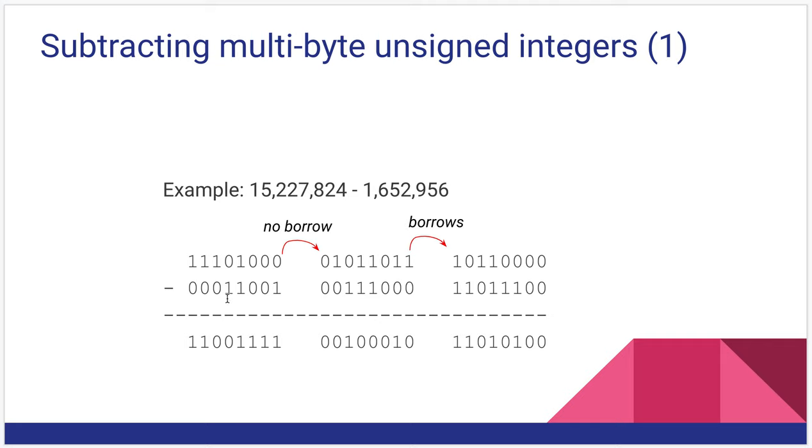Similar to how we did this with multibyte addition, this becomes important for multibyte subtraction. Same numbers from the earlier example, 15 million and change minus 1.6 million and some change. We subtract the low byte first, and it potentially borrows from the middle byte, which will subtract, which potentially borrows from the upper byte. In this case, we don't borrow an upper byte. But each subtraction can potentially borrow or subtract something out of the next byte up.